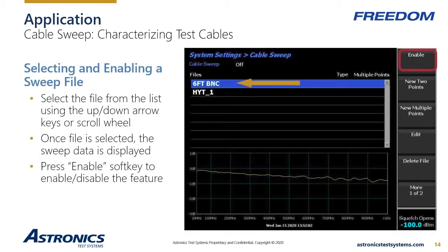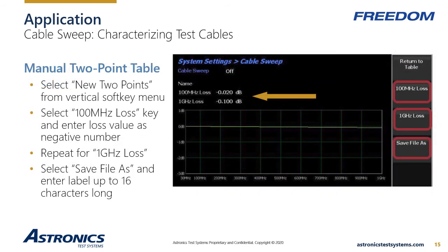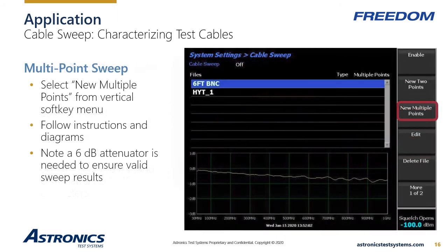This is the main menu for the cable sweep feature. Select an existing sweep file and enable the feature, or choose to create a new two-point or multipoint sweep. A manual two-point sweep is a simple way to create a sweep using only two attenuation values, such as those calculated from the cable's data sheet. Enter an attenuation value for 100 MHz and 1 GHz, and power measurements will be adjusted by a factor interpolated between these two values as a function of frequency. A multipoint sweep steps the user through a short procedure to calibrate the RF path and sweep the cable under test, using the tracking generator functionality of the equipment to measure attenuation as a function of frequency.